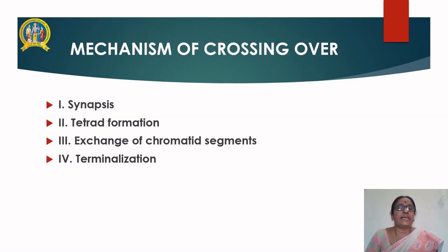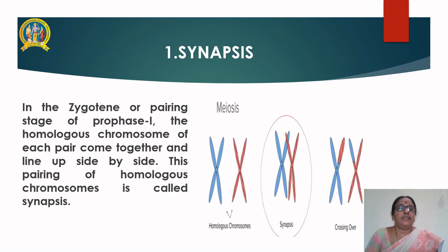Let us see the mechanisms of crossing over one by one. There are four mechanisms: synapsis, tetrad formation, exchange of chromatid segments, and terminalization.